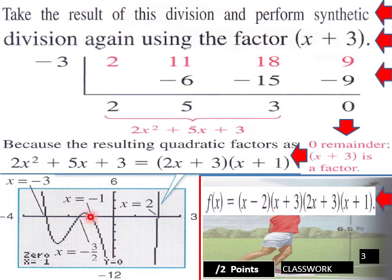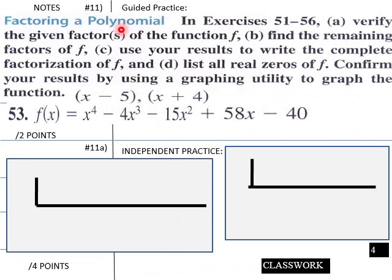You can find these on your graph by using your intersect menu to find those — trace and intersect. Let's go into a guided practice. Verify the given factors of function f, find the remaining factors of f, use your results to write the complete factorization of f, list all real zeros of f, and confirm your results by using a graphing utility to graph the function.